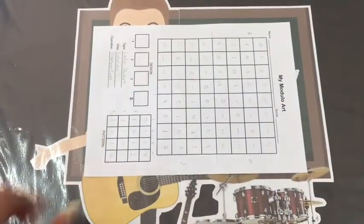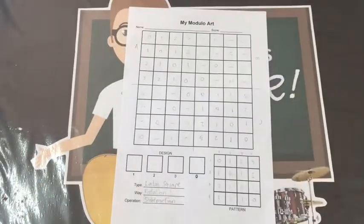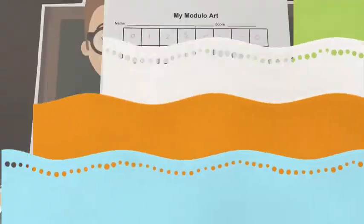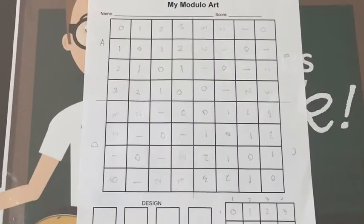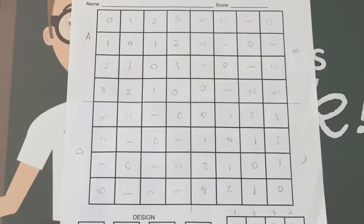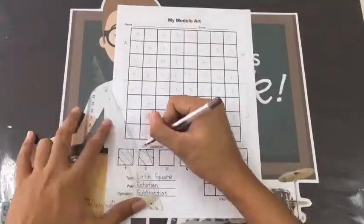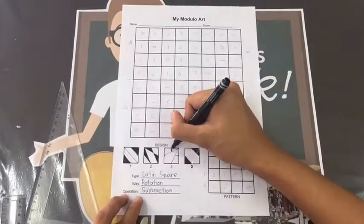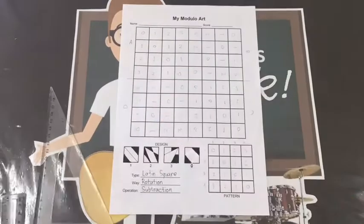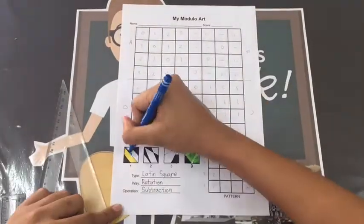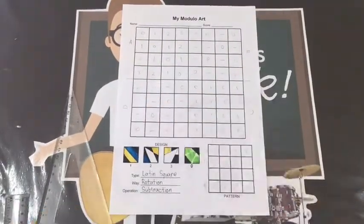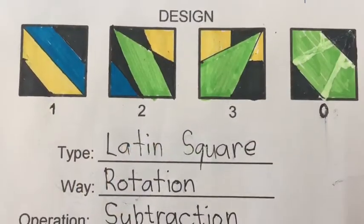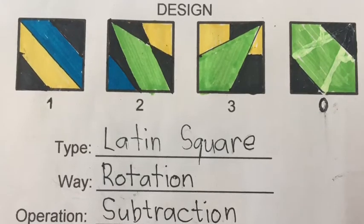Done! It's time to design the modules. You can also create your own. In subtraction, there is no module number 4 — it should be 0.